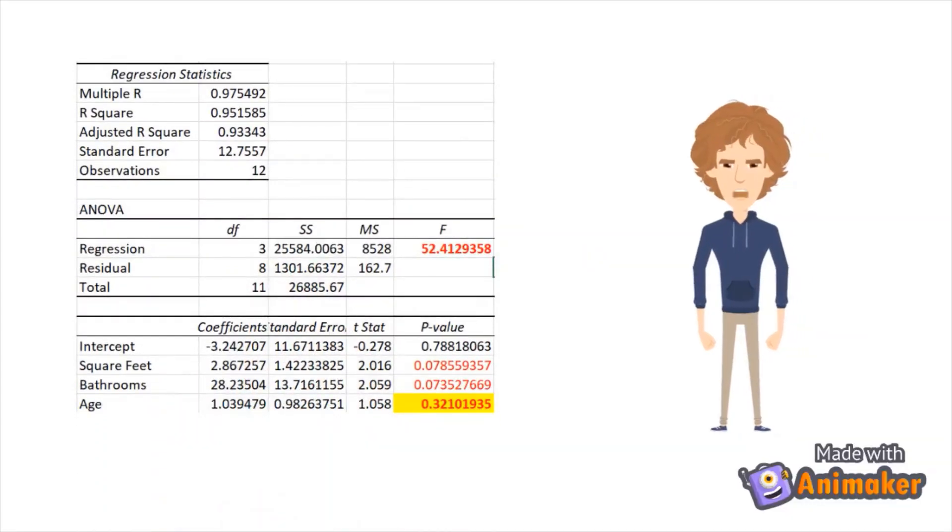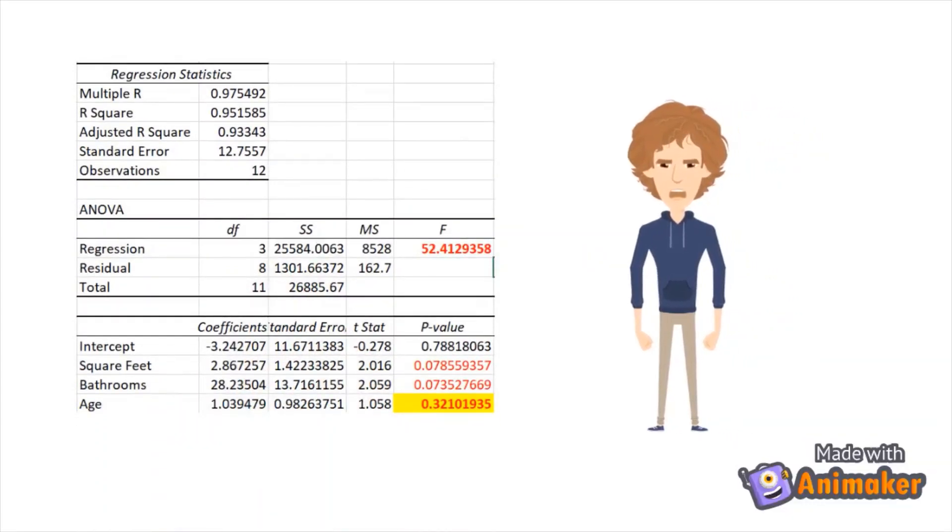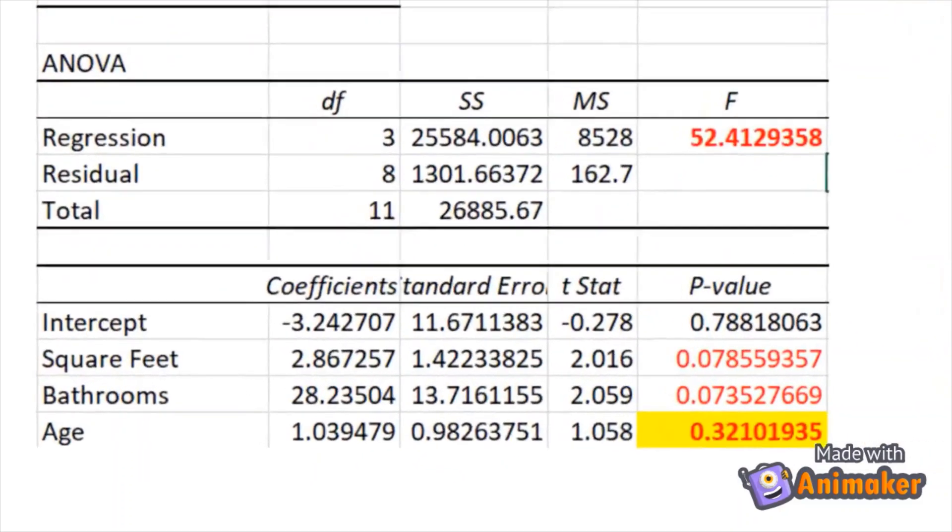Same story! None of the three variables are significant. Let me check the values. Yes! We can drop age variable.